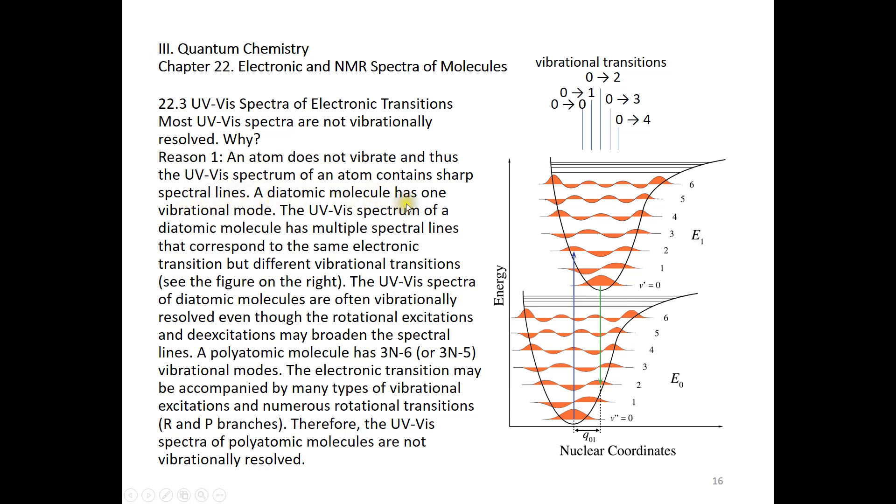A diatomic molecule has one vibrational mode. The UV-Vis spectrum of a diatomic molecule may have multiple spectral lines that correspond to the same electronic transition but different vibrational transitions.